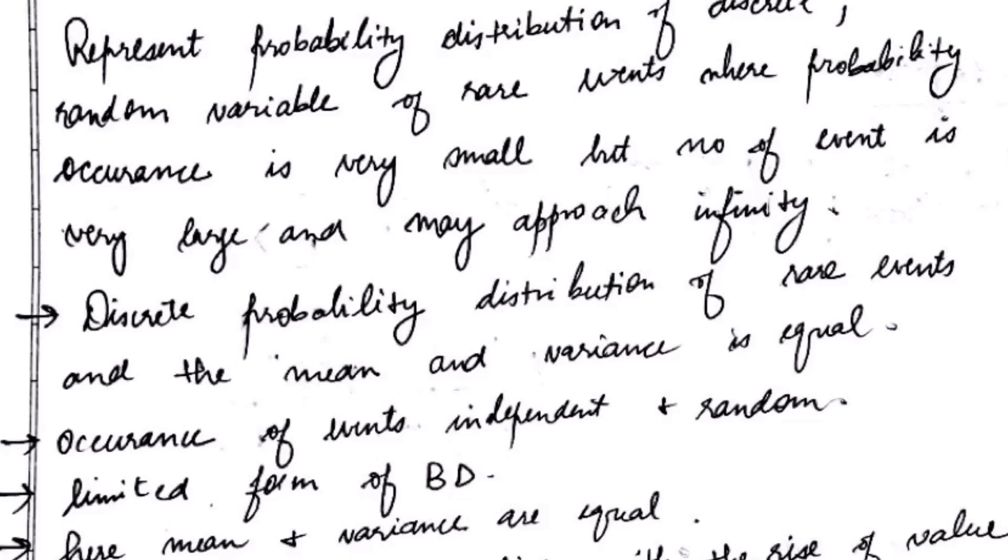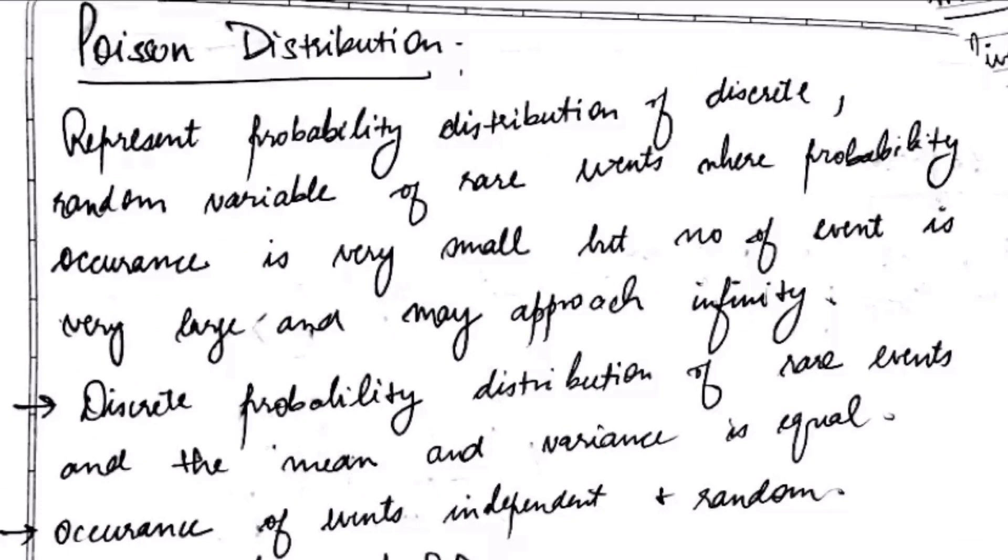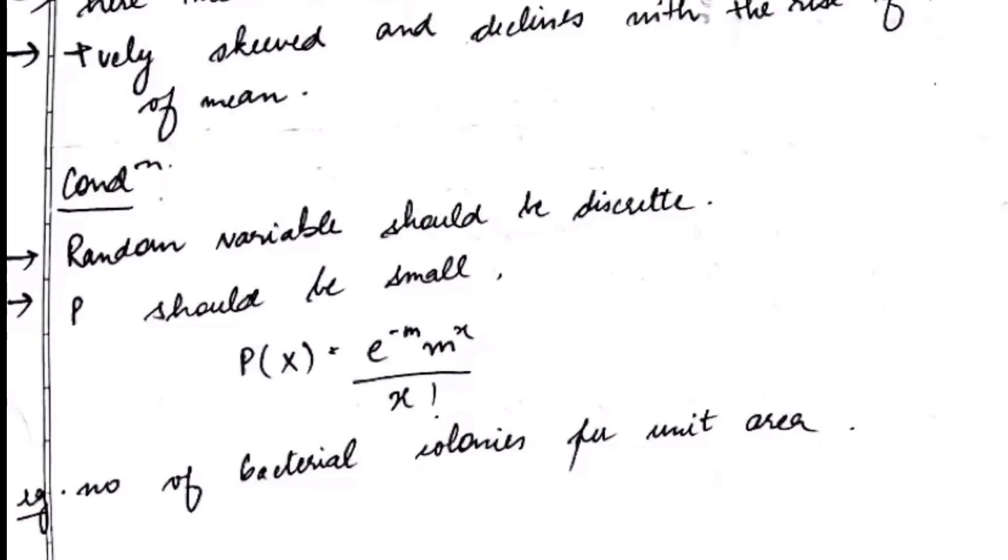In Poisson distribution the mean and the variance are equal. The conditions required for Poisson distribution are: the random variable should be discrete, p should always be small.